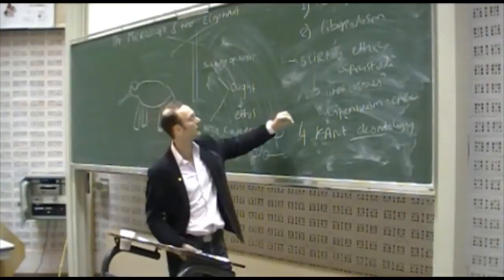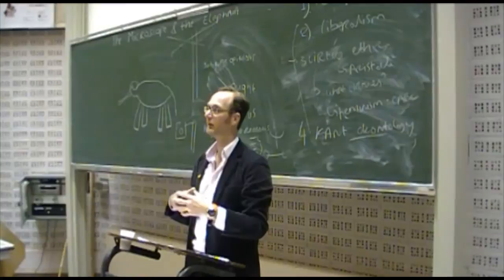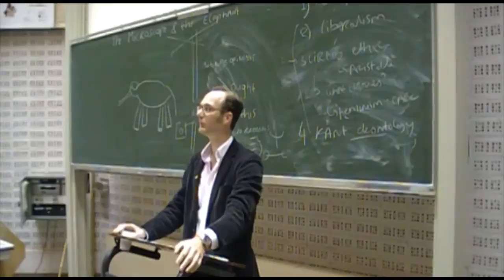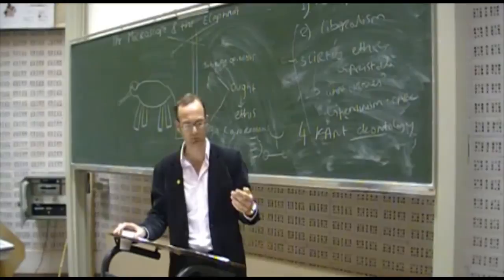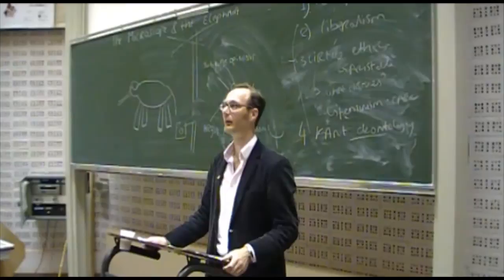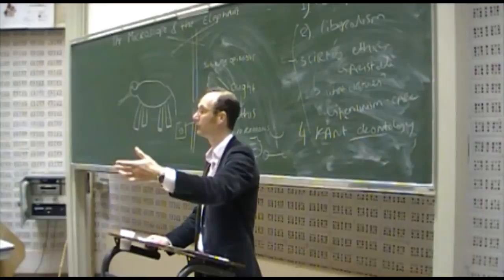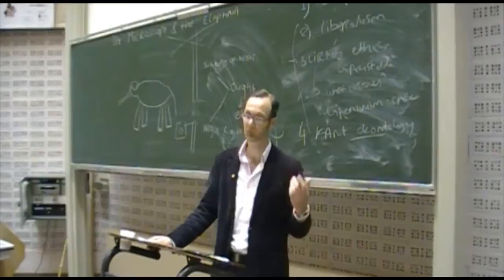So Kant was very much against consequentialism. He said you should always act according to what your duty is. But how do I know what my duty is? Well, just look at, use your reason. And then he said if you use your reason, you can make laws. So if I do something, then Kant said you always have to ask, can I make it into a general law? You shouldn't make exceptions for yourself. So should I lie? And Kant said, well, can I make an exception for myself? Can everyone do what I do? Well, it's going to be complete chaos if everyone lies. So you shouldn't do that. So Kant says, don't lie.